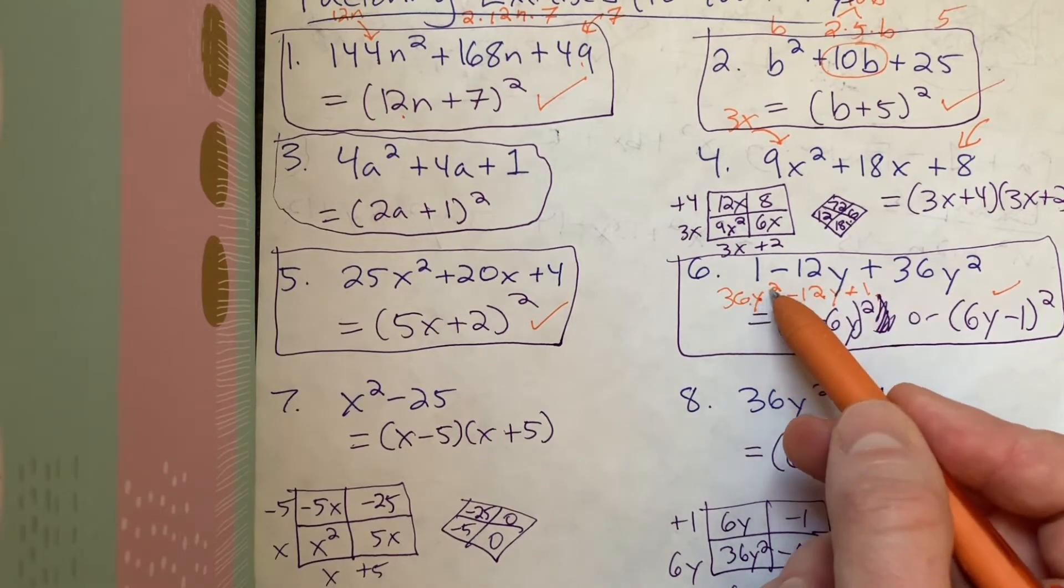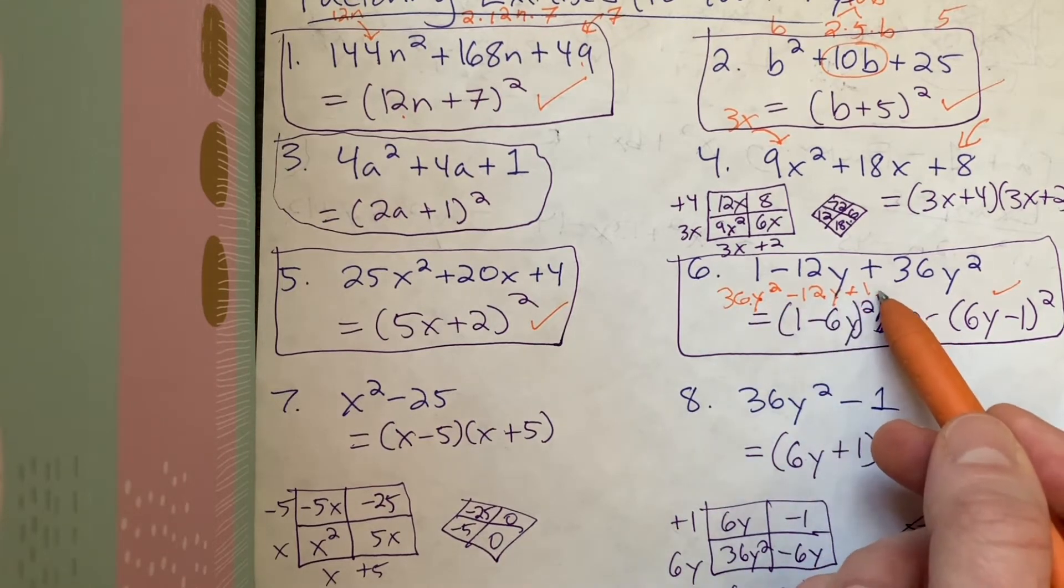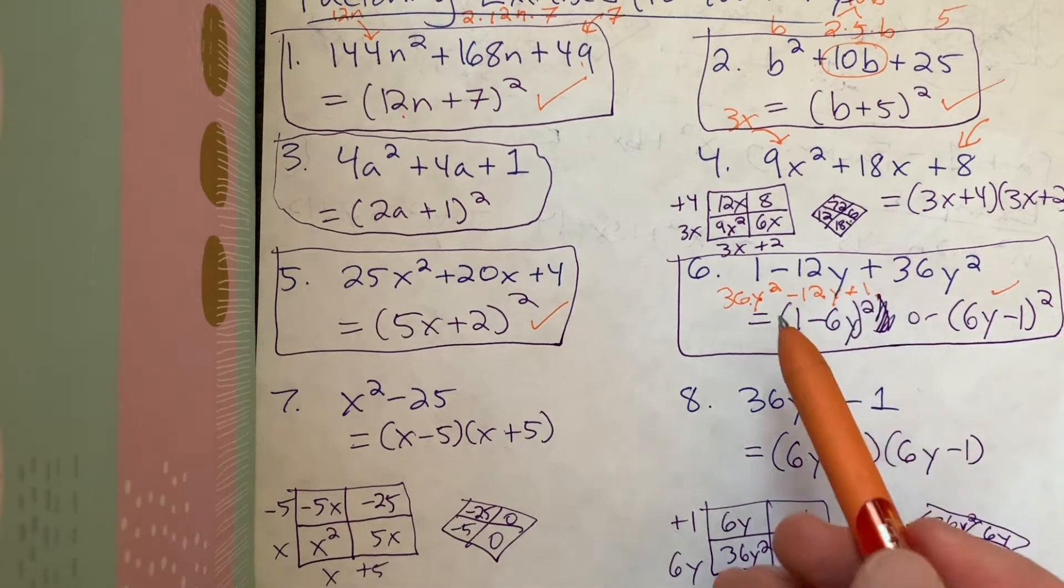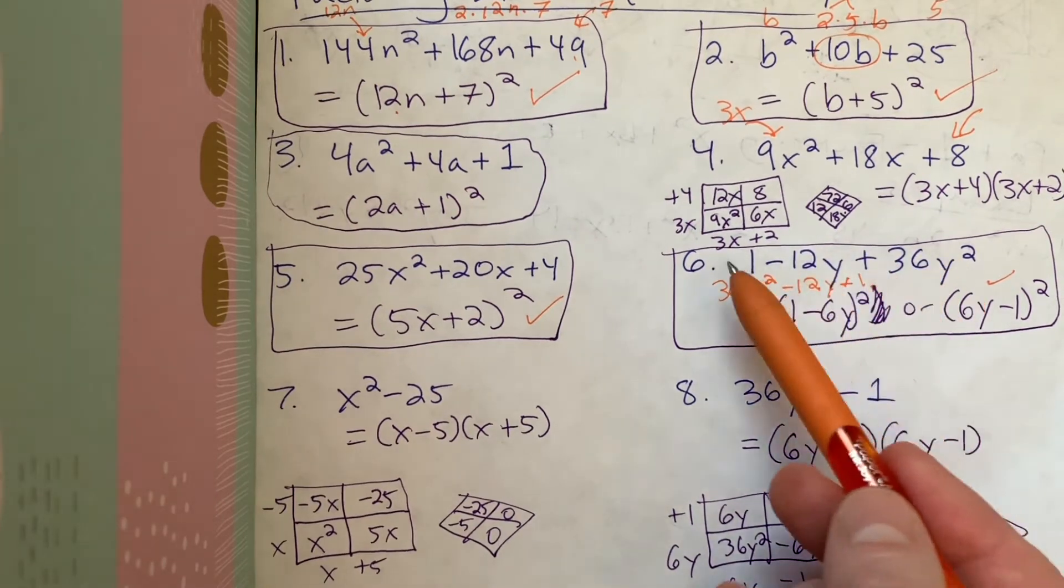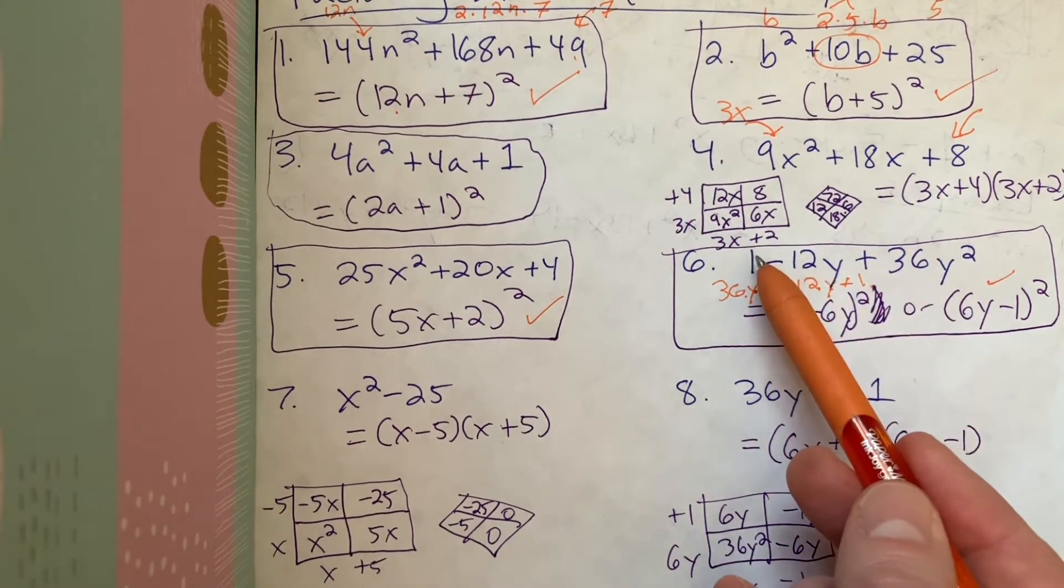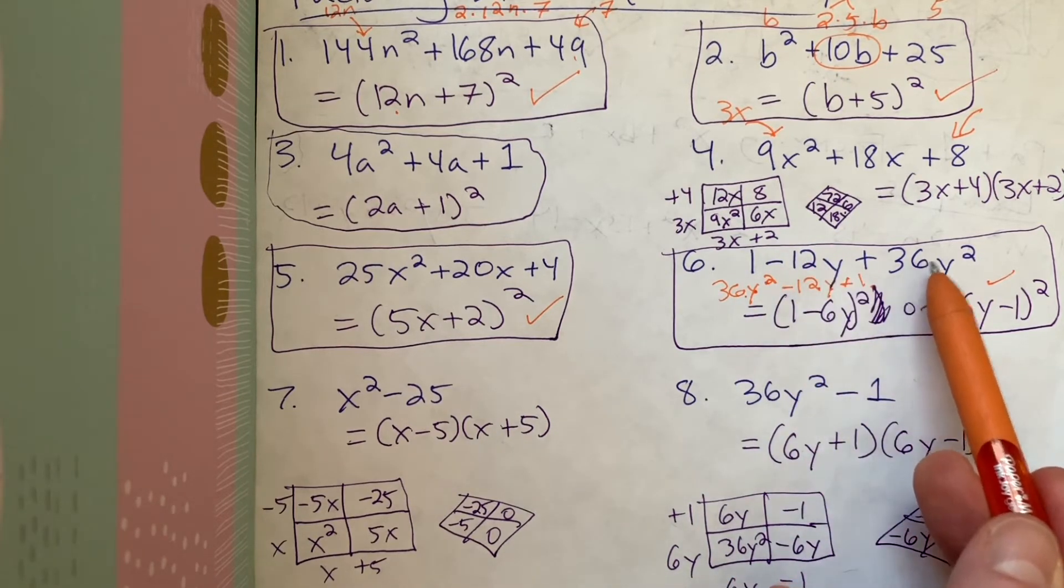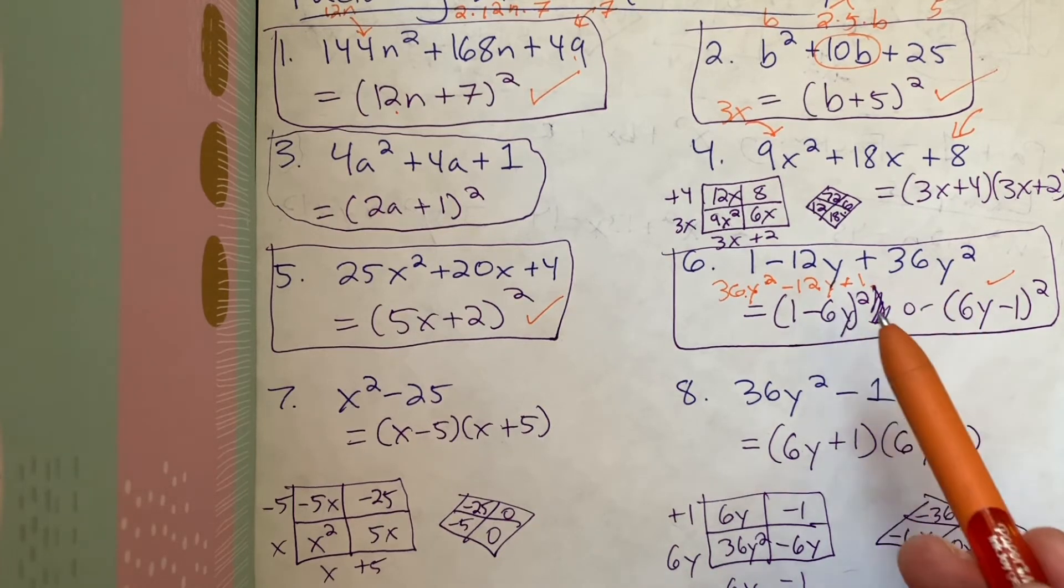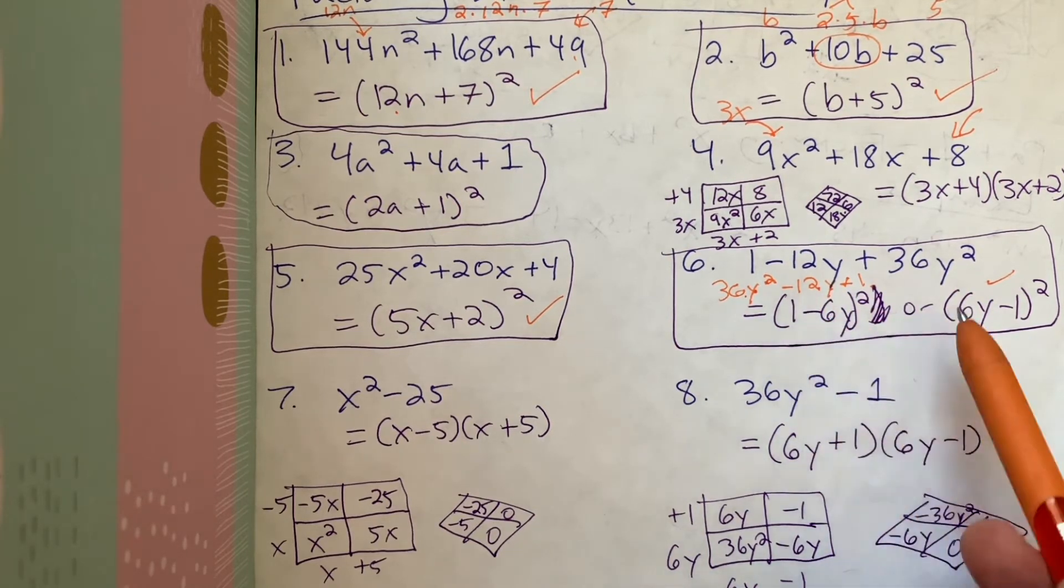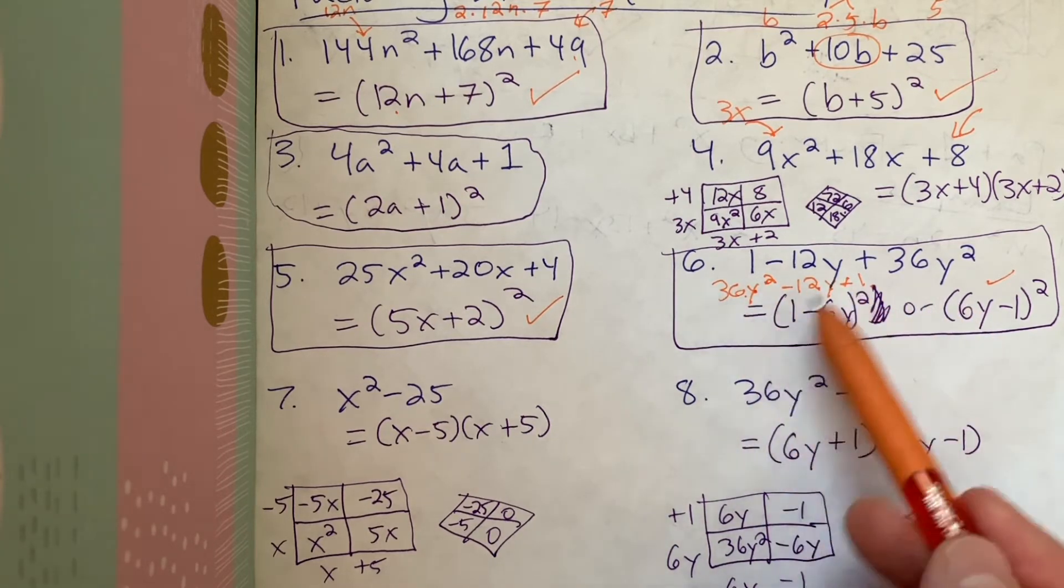So y squared, followed by the term with just y, followed by the term that's just a constant here, just as a number we see it. So if you notice here, we could have factored this top one if we just followed the rule. Square root of 1 would be 1. And then we had a negative b value. So let's make this negative. The negative square root of 36y squared would be negative 6y. And that actually would be the same exact thing as if we had factored it in standard form.